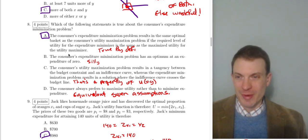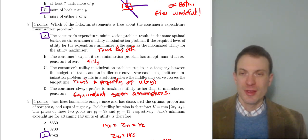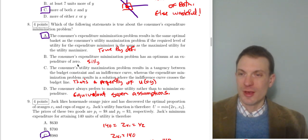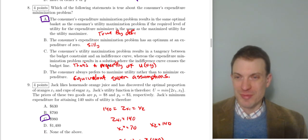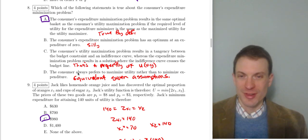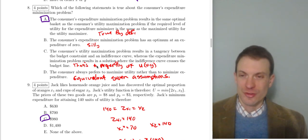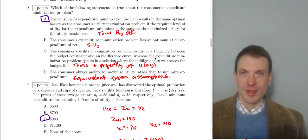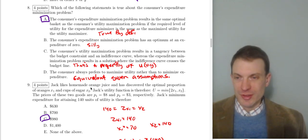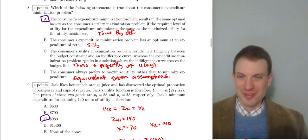That's actually how expenditure minimization was introduced in class. Option B — that the expenditure minimization has an optimum at expenditure of zero — is silly. Option C — that utility maximization results in a tangency while expenditure minimization results in the indifference curve crossing the budget line — is wrong. The type of solution is a property of the utility function itself, not the type of problem. A tangency comes from Cobb-Douglas; crossing comes from perfect substitutes. Option D — the consumer always prefers to maximize utility rather than minimize expenditure — is wrong; given the right assumptions, they're equivalent.